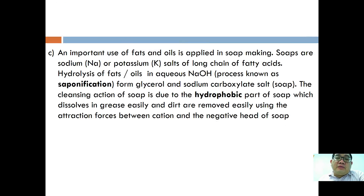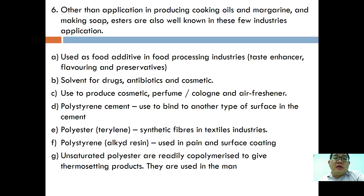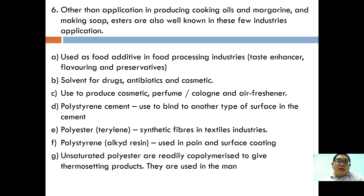An important use of fats and oils is in soap making. Soap is the sodium or potassium salt of a long-chain fatty acid, formed by hydrolysis of fats and oils in aqueous sodium hydroxide — also known as saponification. Other applications include cooking oil, margarine, and soap making. Esters are also used as fuel additives, solvents for drugs and antibiotics, and in cosmetics such as perfume and cologne. Finally, polyesters and unsaturated polyesters are used to bind to surfaces in cement applications. That concludes the fourth video.